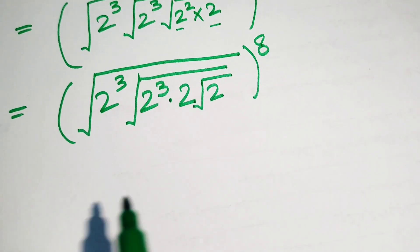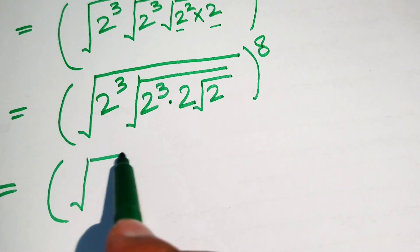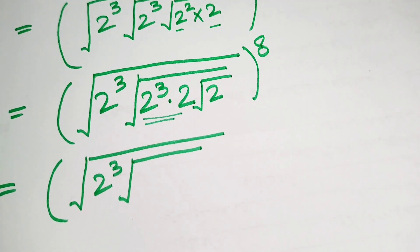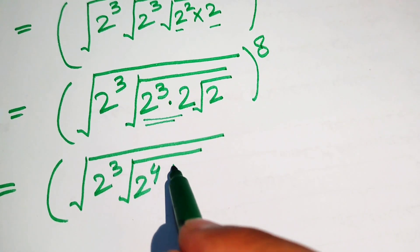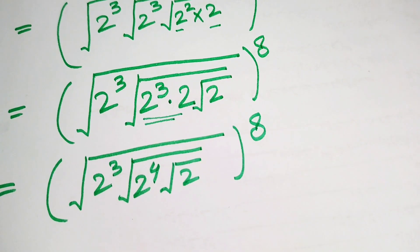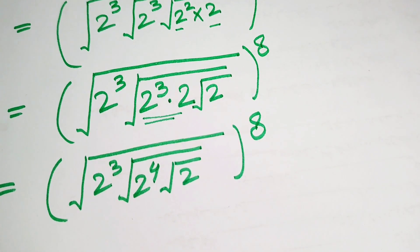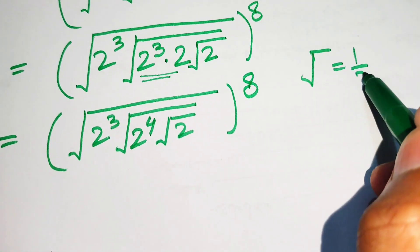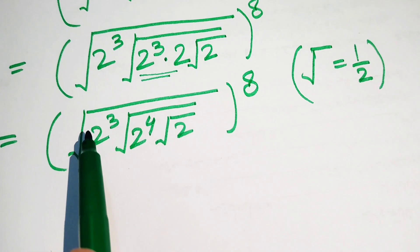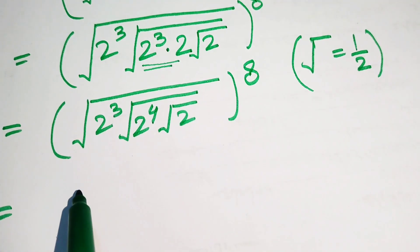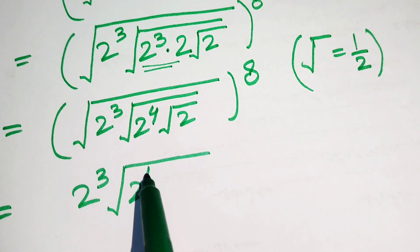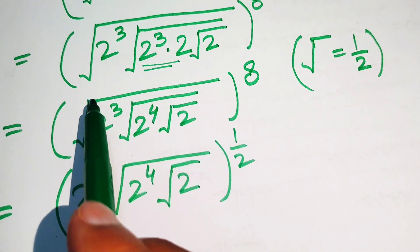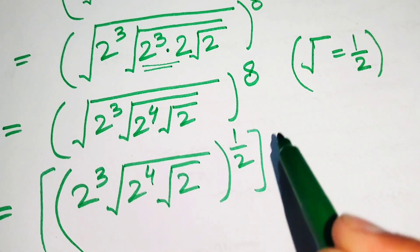In the next step we need more simplification. We rewrite this expression as 2 to the power of 2 to the power of 3, and since the bases on these two terms are the same we add the exponents, giving 2 to the power of 4, into square root of 2, with its whole power 8. Now we separate the square root, knowing that the square root in exponent form equals 1 over 2. We put this square root as exponent 1 over 2 and write it as 2 to the power of 3, into square root of 2 to the power of 4, into 2 with exponent 1 over 2 and whole exponent 8.